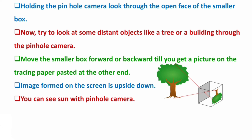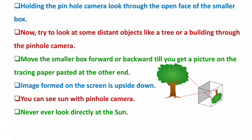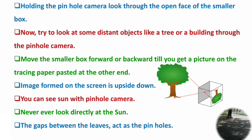You can see the sun with a pinhole camera, and distant objects appear closer. You can use this pinhole camera to observe the sun during an eclipse — to see the shape and how the sun is hidden. Never look directly at the sun, especially during an eclipse, because there are many harmful rays that can damage your eyes. Also, the gaps between the leaves of a tree act as pinhole cameras — you can see round patches of sunlight on the ground, which are small images of the sun.